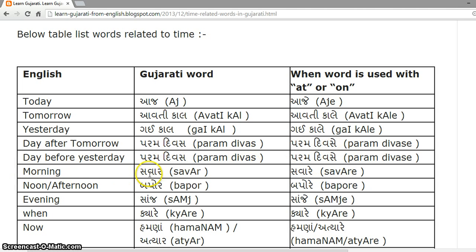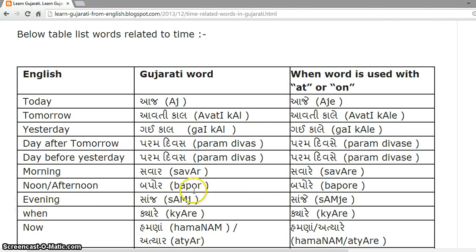Morning is 'Sawar', and with 'at' it becomes 'Saware'. Noon or Afternoon is 'Bapore'. Evening is 'Sanj', and with 'at' it becomes 'Sanje'.